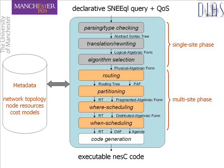Note that optimised decisions are informed by metadata such as the network topology, resources on nodes such as memory available, and predictive cost models.